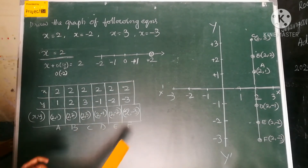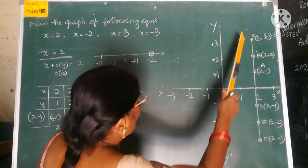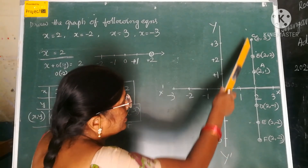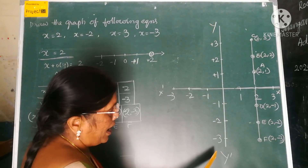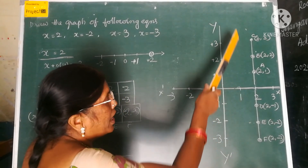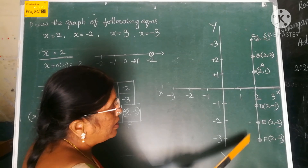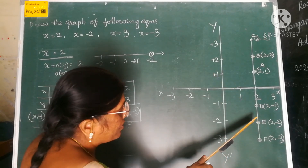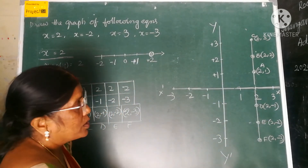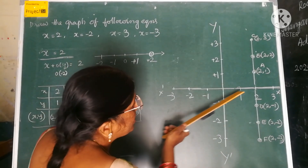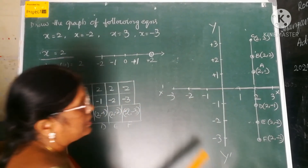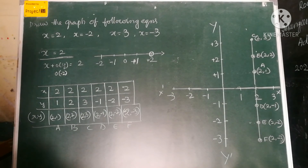Now we have drawn the graph for x is equal to 2. We have got a line which is parallel to the Y-axis, 2 units away from the Y-axis. Is that clear, children? We plotted x equal to 2 on the graph paper and observed that it is a straight line parallel to the Y-axis, and every point is 2 units away from the Y-axis.